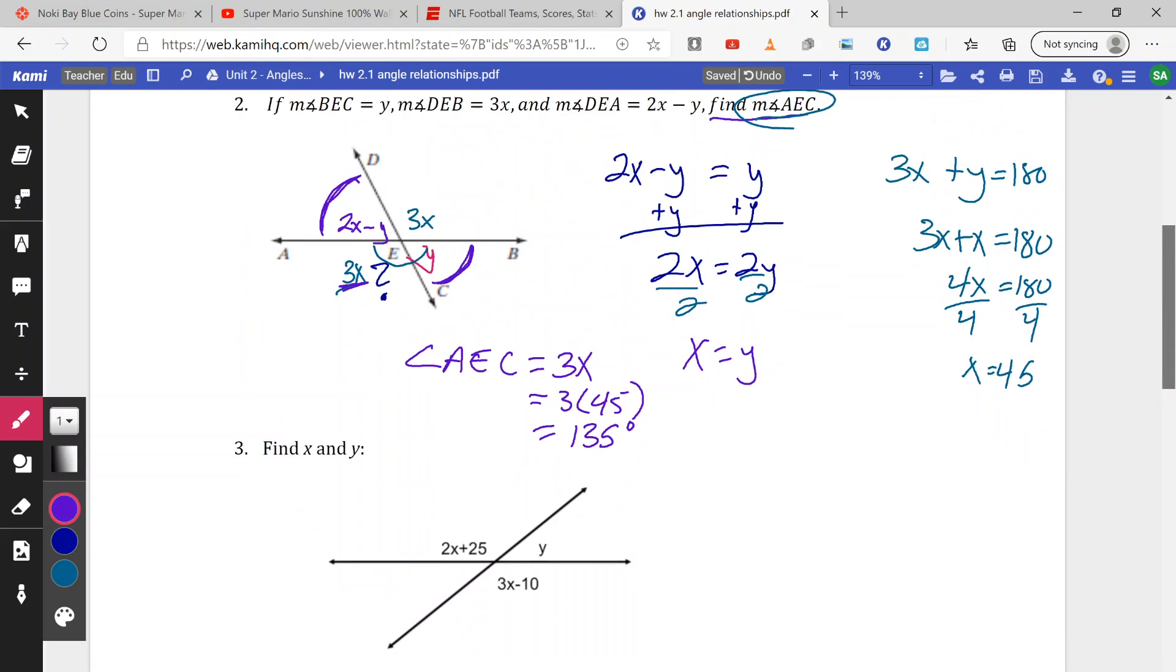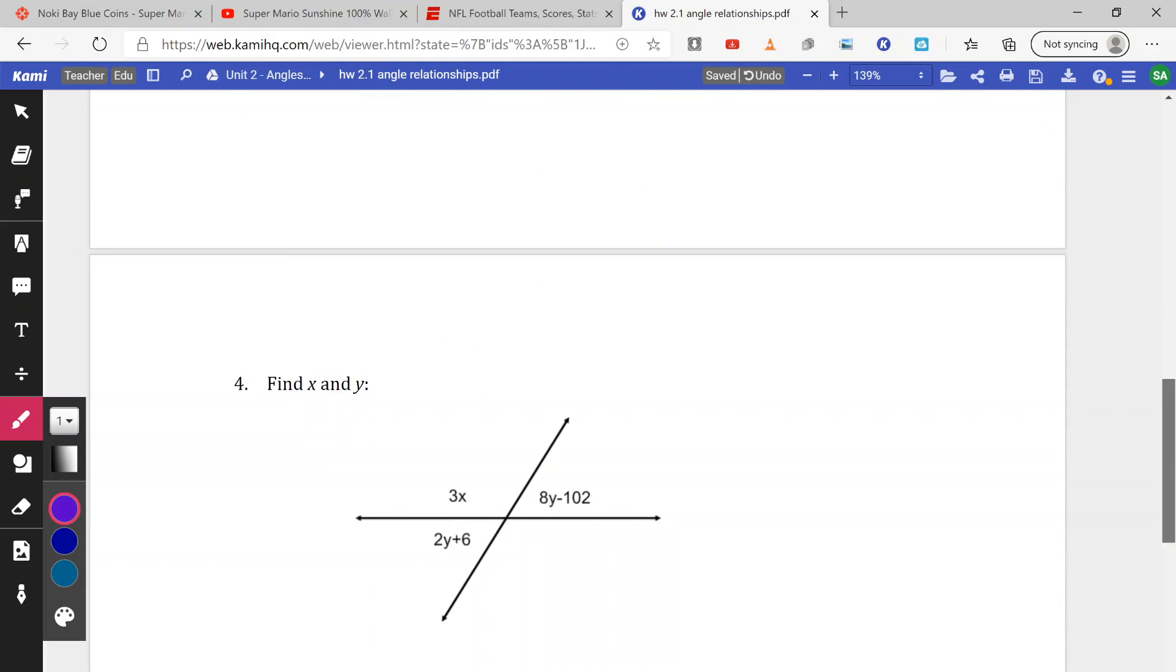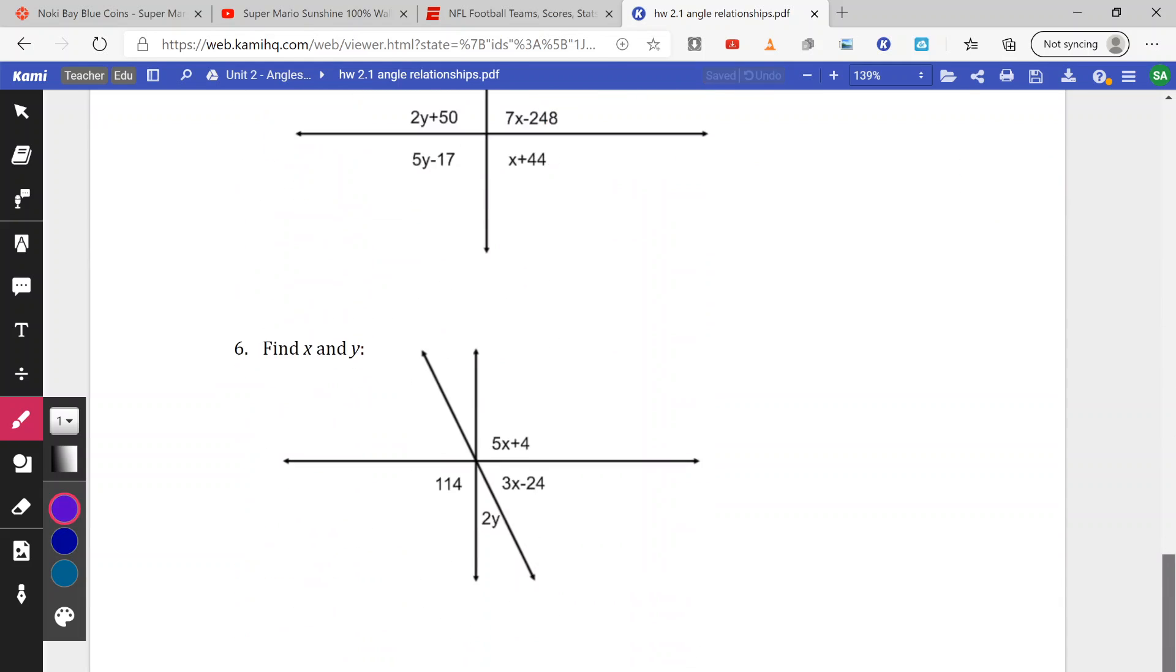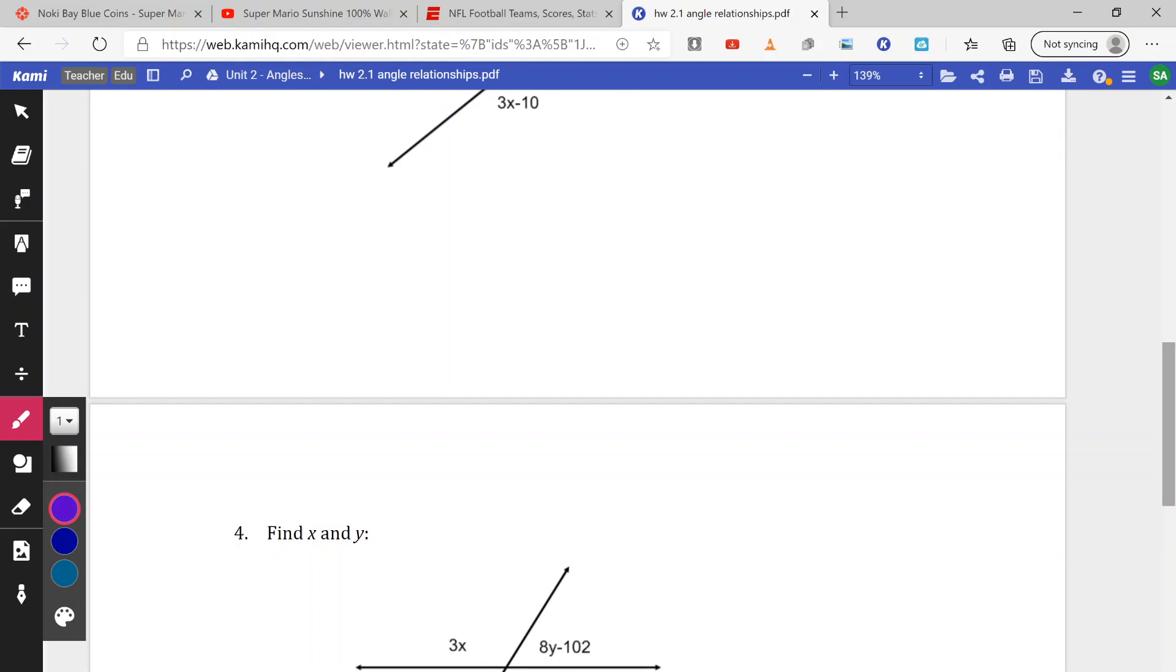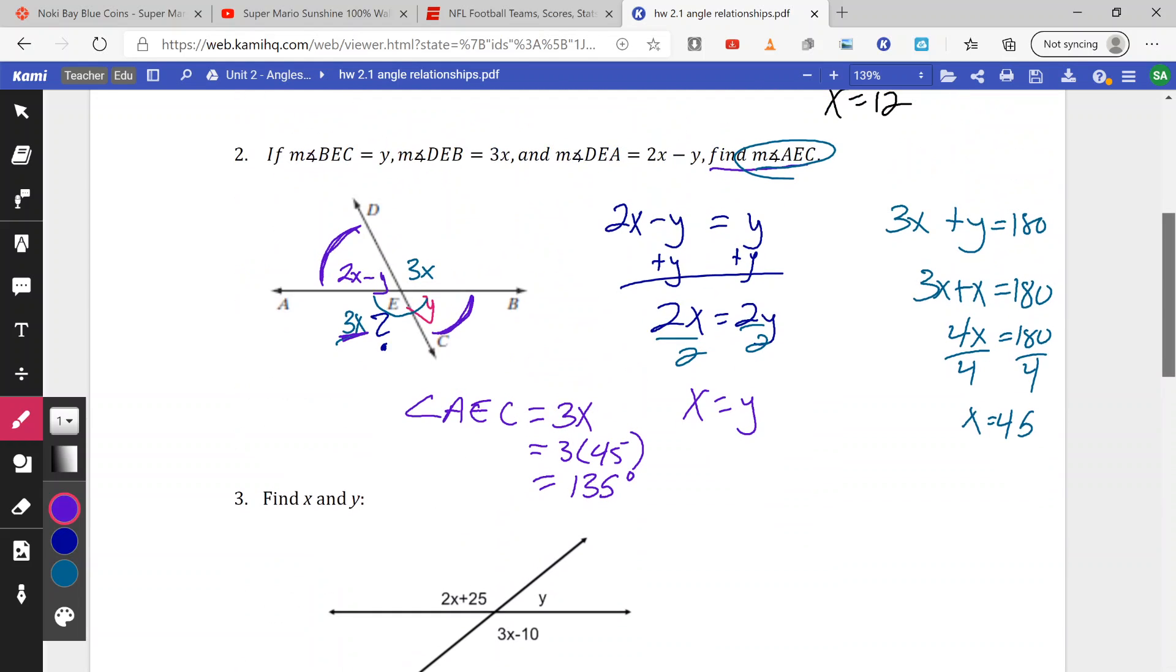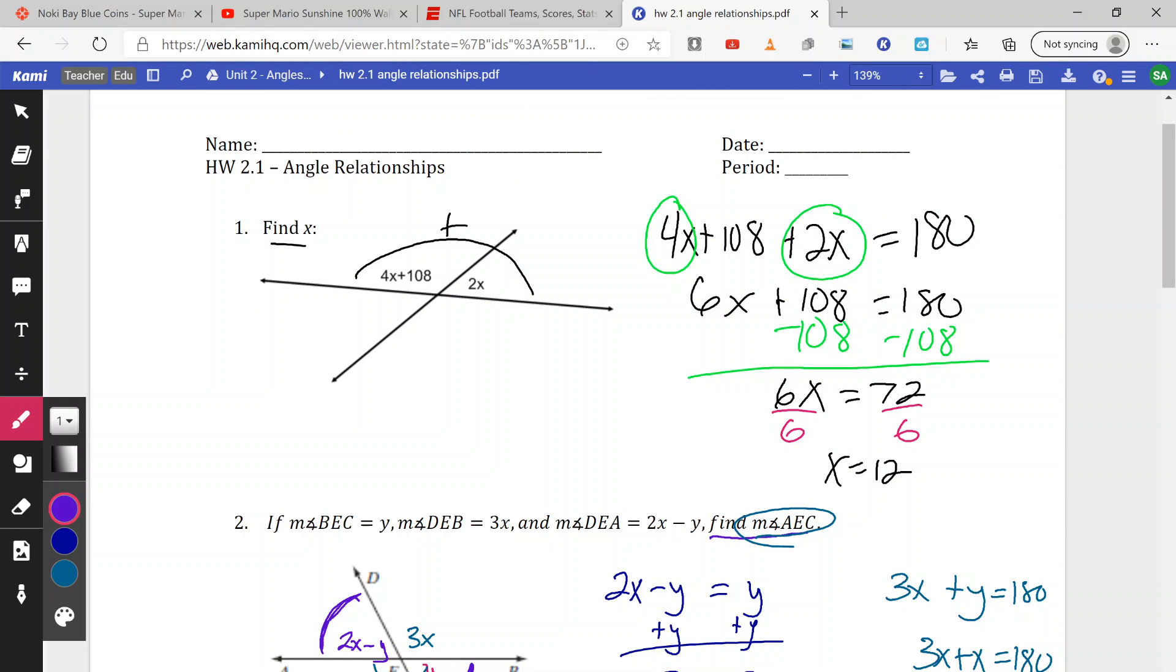And that's essentially what we're going to be doing with the rest. 3, find x and y. 4, same thing. Find x and y. 5 and 6 are all the same thing. Using rules of linear pairs, substitution, as well as vertical angle relationships to find the missing variables and values.